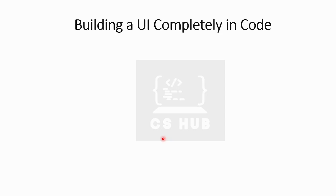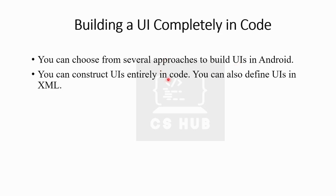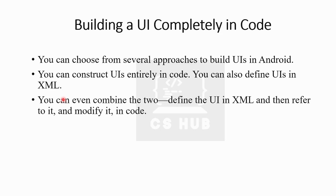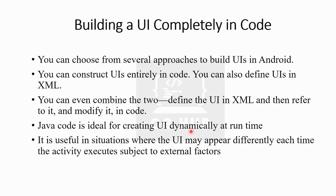There are three different methods for building a UI. The first method is building a UI completely in code using Java. You can construct UIs entirely in code, define UIs in XML, or combine the two — define the UI in XML and then reference and modify it in code. Java code is ideal for creating UI dynamically at runtime.